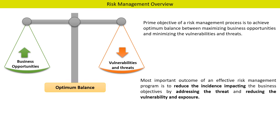The most important outcome of an effective risk management program is to reduce the incidence impacting the business objectives by addressing the threat and reducing the vulnerability and exposure. Simply put, risk management has two parameters: business opportunities should be improved, and at the same time vulnerabilities and threats should be reduced.